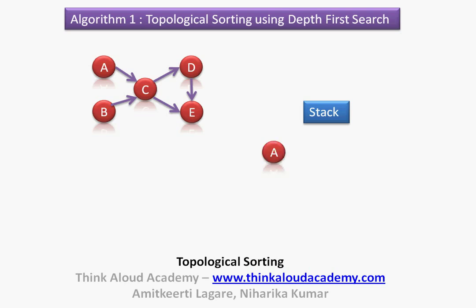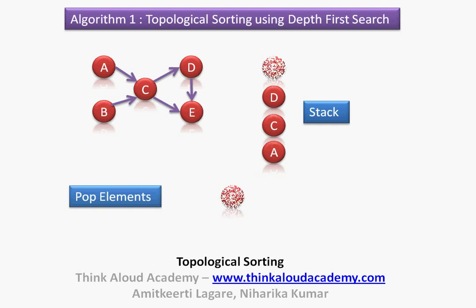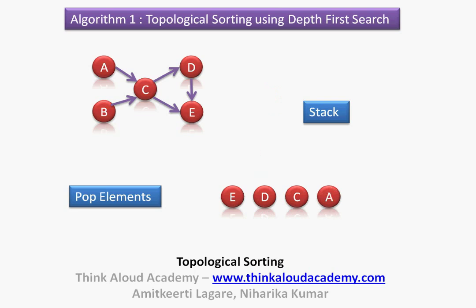For depth first search, we start at one vertex and keep going in depth-first order until we reach the end. If I start with A, my next vertex would be C. From C, I have two options: D or E. Let us take D as the next vertex, and from D I go to E. Once I hit E, I have reached a dead end, so I start popping elements from the stack: first E, then D, then C, then A. I am left with vertex B, the only vertex not yet in the stack, so I put B back in the stack.